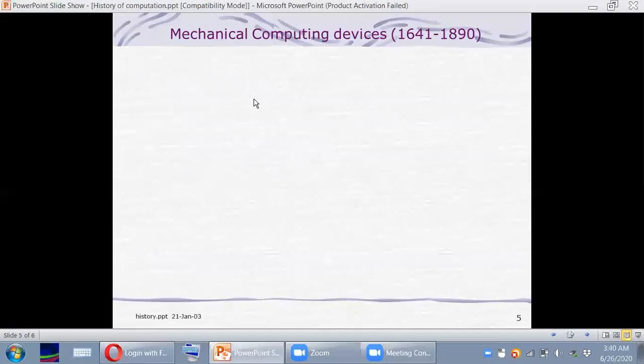And that would be our next topic. In the next topic, we will be discussing mechanical computing devices. That period starts from 1641 and ends in 1890. From 1641 to 1890, some mechanical computing devices were invented. Unlike manual devices, these mechanical devices have some kind of machines in them.